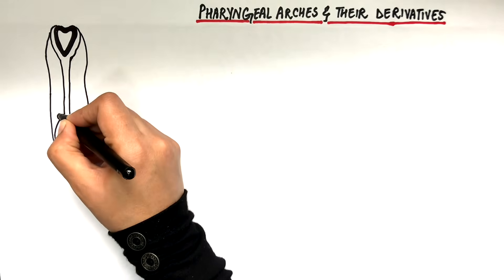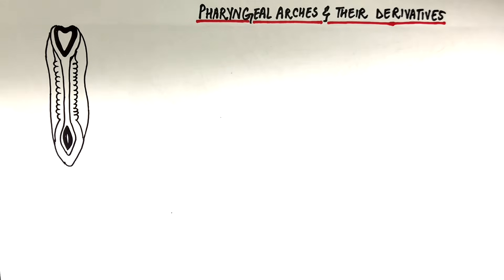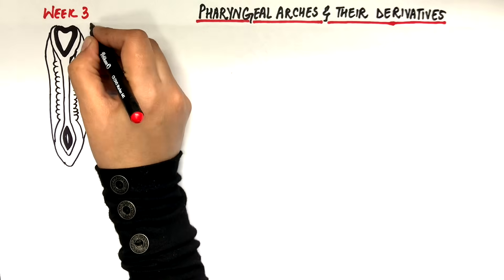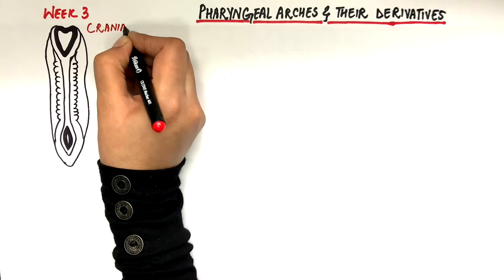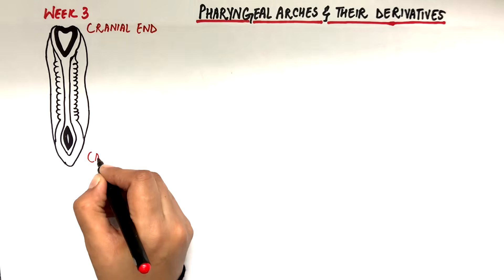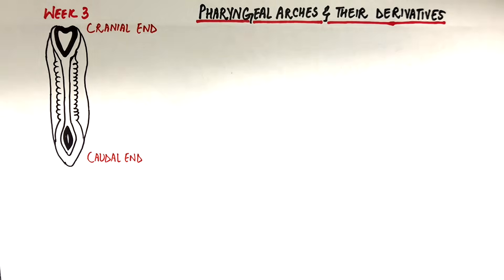This will be the frontal or ventral view of an embryo at week 3. The developing embryo will have two ends: the head or the cranial end, and the tail or the caudal end.